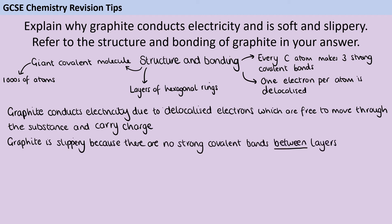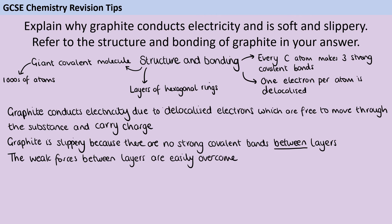Graphite is slippery because there are no strong covalent bonds between layers. Each layer of graphite — what we call a piece of graphene — has strong covalent bonds inside that layer. But each layer is just sat on top of the layer below it and there aren't any bonds between them. That means there are only very weak forces between them which are really easy to overcome, so the layers can slide past one another.